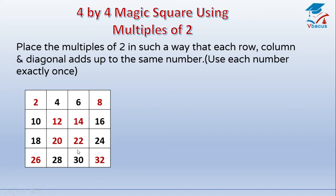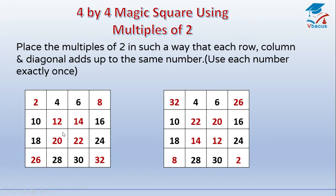32 will go to this position — it will replace 2 and 2 will replace 32. 26 will replace 8 and 8 will replace 26. Now inside the square, 22 will replace 12 and 12 will replace 22. You have seen that 32 has come here, 2 has come here, 8 has come here, 26 has come here; inside the square, 22 has come here, 12 is here, 20 has gone there, 14 has come here.